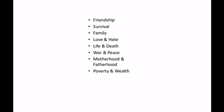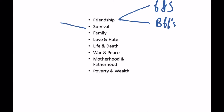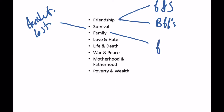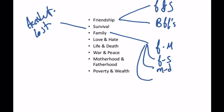These themes can be explored from several angles of the story. For example, friendship could be between a father and son, or between best friends. Survival could be after an accident or because characters got lost. Family could be father and mother, father and son like in The Pursuit of Happiness, mother and daughter, or siblings. War and peace doesn't require both — it could be just one of them.